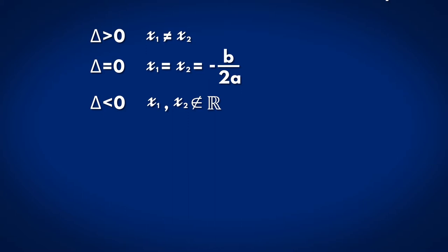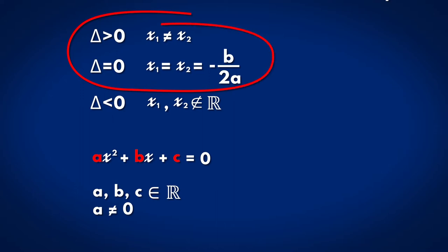In conclusion, equations of the form ax² plus bx plus c equals 0 with real number coefficients a, b, c and a different than 0 have real solutions if delta larger or equals to 0, but they will not have real solutions if delta smaller than 0. Let's solve the equation 4x² plus 24x equals 45.